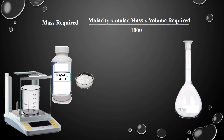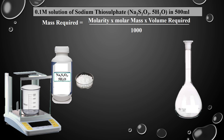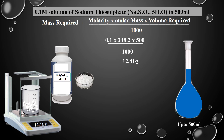To prepare 0.1 molar solution of sodium thiosulfate in 500 mL: put 0.1 in molarity, 248.2 in molar mass, and 500 in volume required. Divide the answer by 1000 mL — we get required mass 12.41 grams. Take 12.41 g of sodium thiosulfate in a beaker, dissolve in water, and dilute up to 500 mL. This is the 0.1 molar solution in 500 mL.